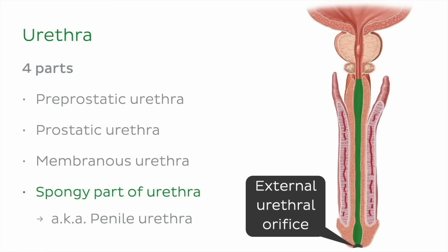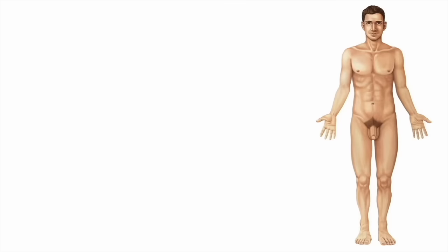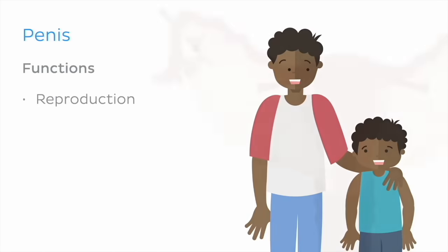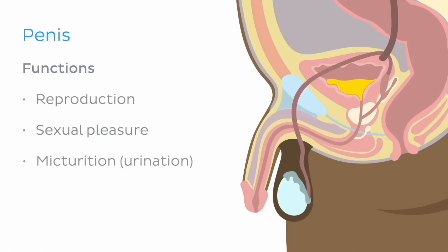With the internal organs all wrapped up, let's now turn our attention to the external reproductive organs. Let's begin with the male copulatory organ, the penis. This organ's functions are reproduction by serving to introduce sperm into the female reproductive system during intercourse, sexual pleasure, and micturition, since it conveys urine away from the urinary bladder to the external urethral orifice to be expelled from the body.